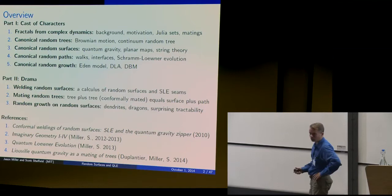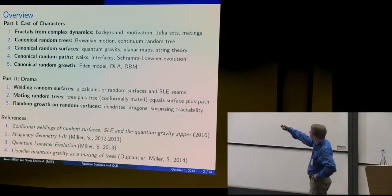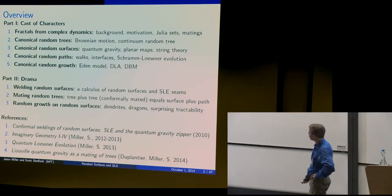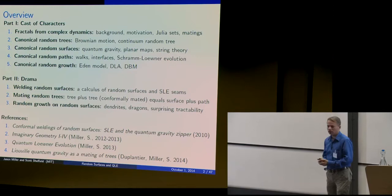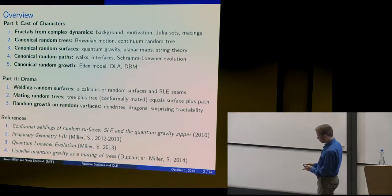It turns out there's a canonical, most natural way to choose a random two-dimensional manifold that has fractal properties. Also random paths — everyone knows the canonical random path is Brownian motion. But if you want a path in the plane that doesn't intersect itself, the canonical random way to do that is to construct it using so-called SLE, or Schramm-Loewner evolutions. And then there are also canonical random growth processes that have evolved to try to study everything from snowflakes to coral reefs to cancer cells.